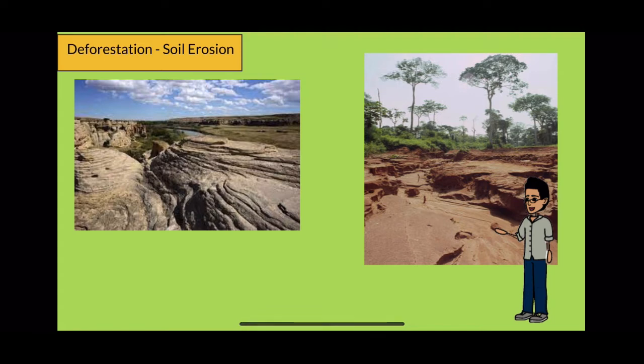This picture is soil erosion in Africa, but if we don't stop deforestation in Alberta, our lands will start to depict the land shown.